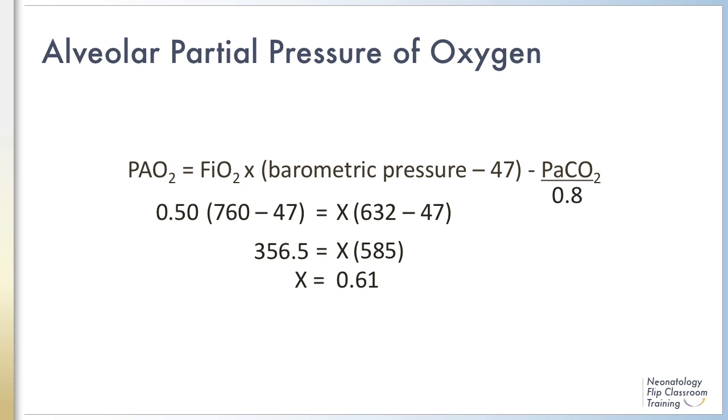Since the PACO2 is not going to vary, we can solve for the new FIO2 required in Denver, where the atmospheric pressure is 632. So setting up the equation, we have 0.5 times the barometric pressure in Nashville, 760 minus 47.